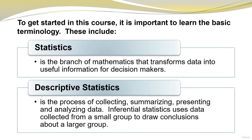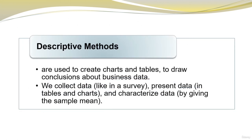To get started in this course, it is important to learn the basic terminology. Statistics is the branch of mathematics that transforms data into useful information for decision makers. Descriptive statistics is the process of collecting, summarizing, presenting, and analyzing data. Inferential statistics uses data collected from a small group to draw conclusions about a larger group. Descriptive methods are used to create charts and tables to draw conclusions about business data — we collect data like in a survey, present data in tables and charts, and characterize data by giving the sample mean.